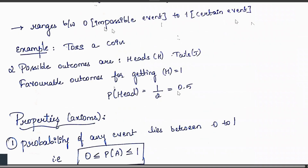For example — tossing a coin: there are two possible outcomes, head or tail. The favorable outcome for getting a head is 1 (head can come only once). So the probability of getting a head = 1 (favorable outcomes) / 2 (total outcomes) = 0.5, which lies between 0 and 1.